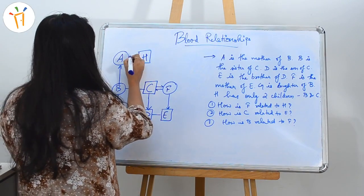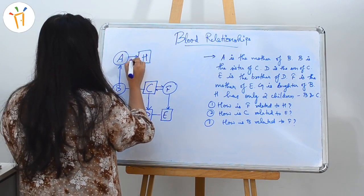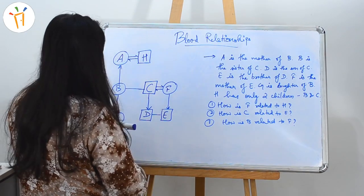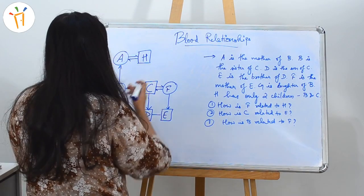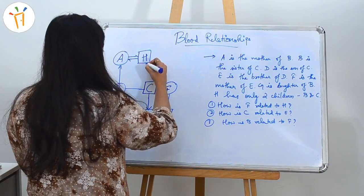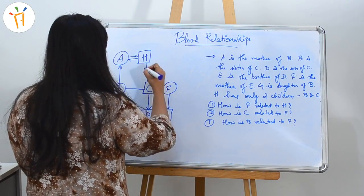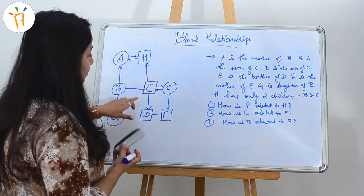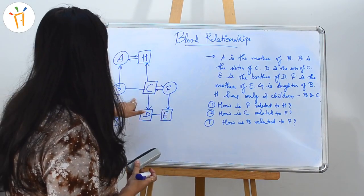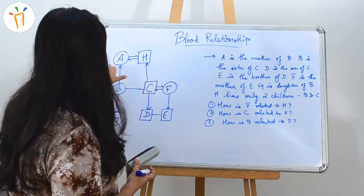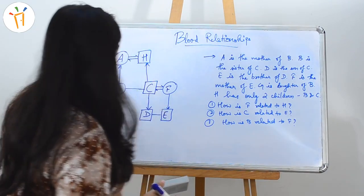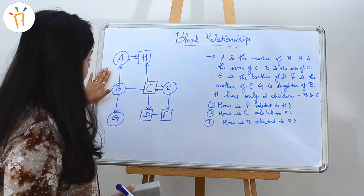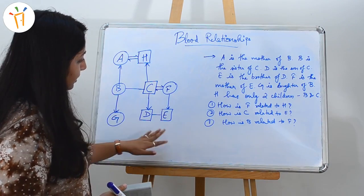A is the mother, so A and H will be husband and wife. We can use this to denote B and C being kids of A and H. Finally, our whole complete diagram is done.